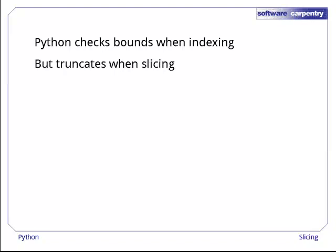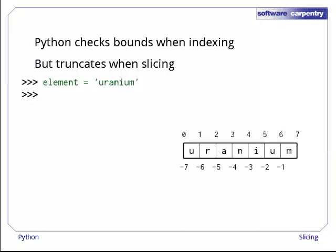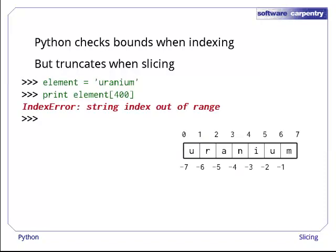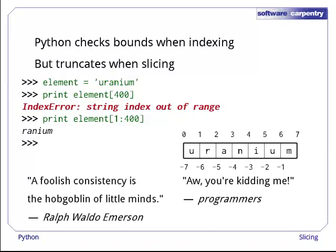But Python just truncates out-of-bounds values when slicing. Here's our string uranium again. If we try to get element[400], we get an error, because the string isn't that long. If we take a slice from index 1 up to index 400, though, Python rounds down the upper bound for us. Some people find this useful, but others trip over the inconsistency from time to time.